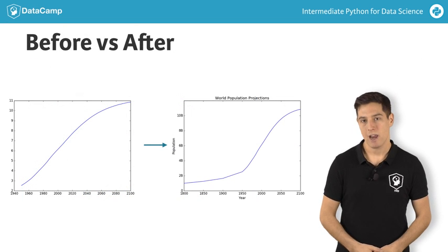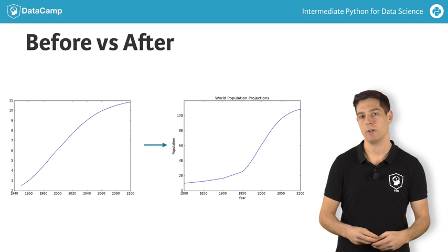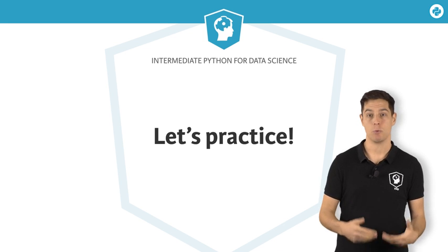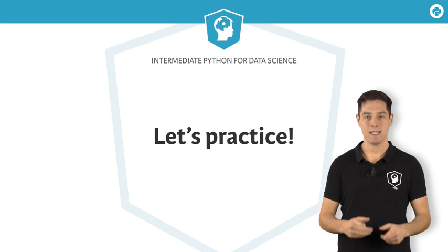Now that's how we turn an average line plot into a visual that has a clear story to tell. Over to you now. Head over to the exercises, gradually customize the world development bubble chart, and become the next Hans Rosling.